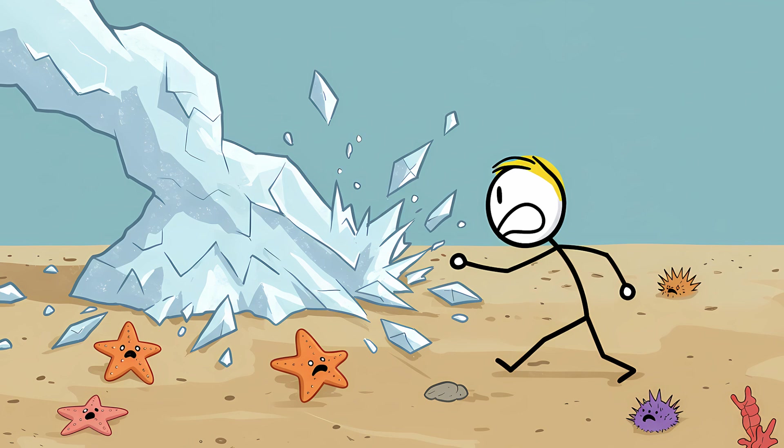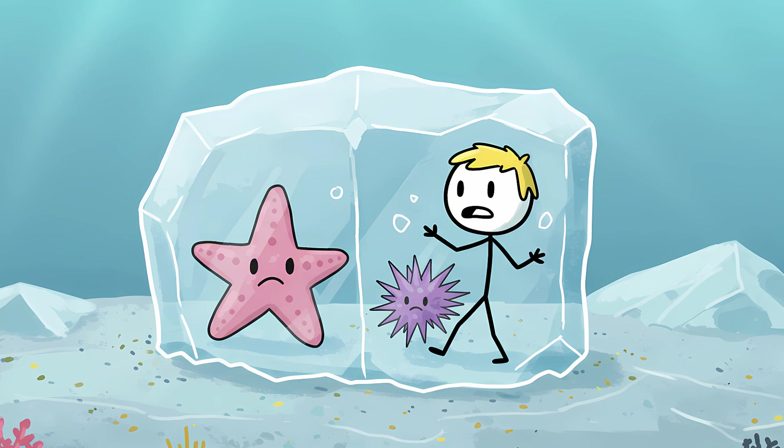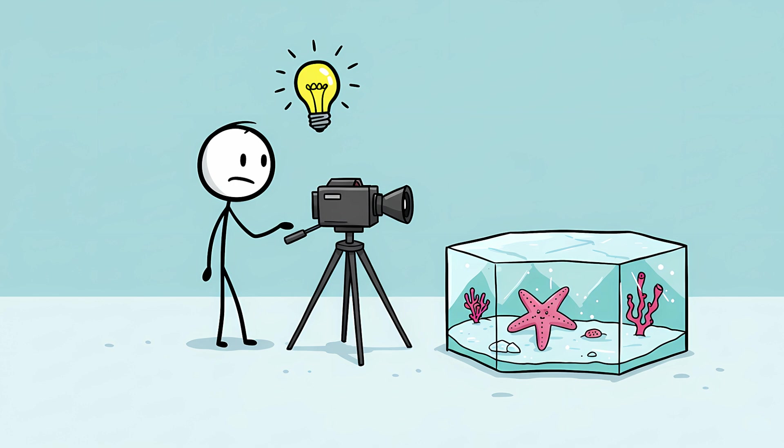But as this icy finger reaches the seabed, all hell breaks loose for anything living there. Starfish, sea urchins, and other slow-moving creatures on the ocean floor are completely defenseless. The brinicle continues to spread its icy web across the seafloor, instantly encasing them in a tomb of solid ice. It's a localized, miniature ice age. We only managed to film this process for the first time in 2011, revealing a phenomenon that is both a stunning display of physics and a chillingly effective method of mass murder for unsuspecting starfish.